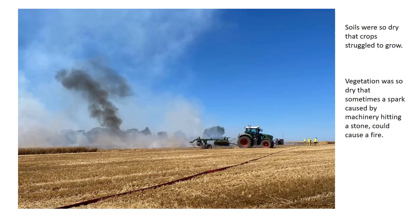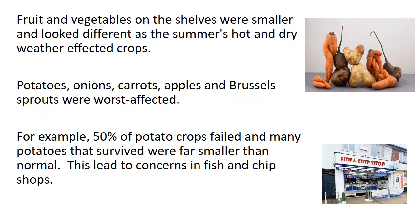Because the soil was so dry, crops just weren't growing as well. In fact, there were grass fires and crops that caught on fire caused by sparks when they tried to harvest them. The knock-on effect was that fruit and vegetables were much smaller and looked different because the weather had damaged the crops. For example, 50% of potato crops failed and many of the surviving potatoes were far smaller than normal.